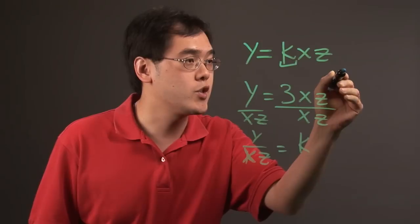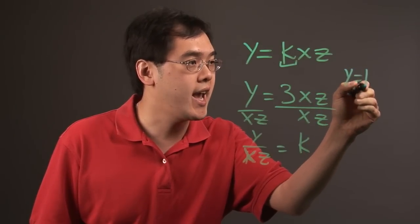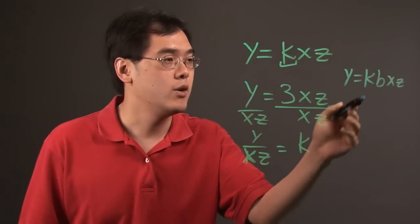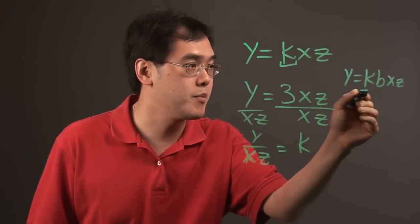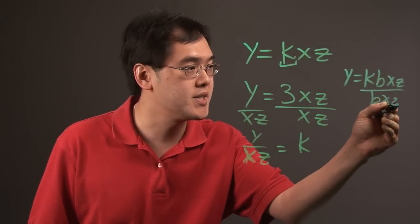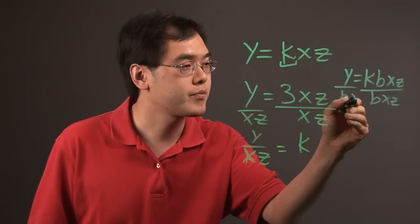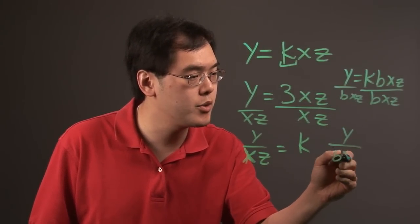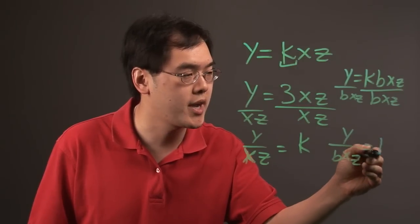If you have a situation where y equals, let's say, k×b×x×z, where b is an additional variable, you can make the same argument. If you divide both sides by b×x×z, the ratio between y and the variables below it equals a constant.